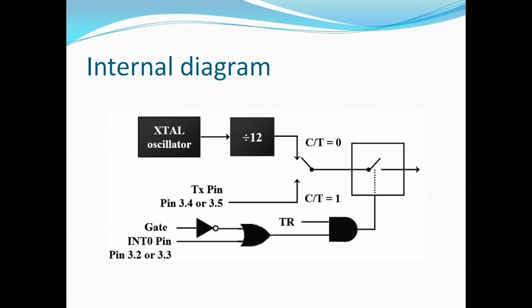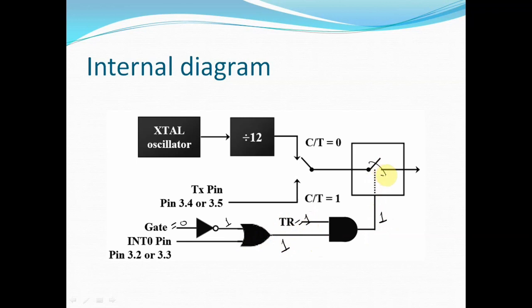For controlling the timer we require the TR bit, which is in the TCON register. The start and stop of the timer is controlled by software using this TR bit — TR0 for timer 0 and TR1 for timer 1. Suppose initially gate is equal to 0. Since there is an inverter, after the inverter you get 1. This feeds into an OR gate, and if any one input is 1 the output is 1. So when you set TR equal to 1, the output of the AND gate is 1 and you control the timer.